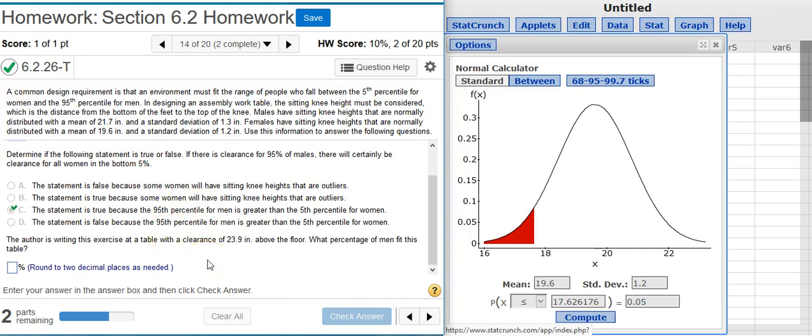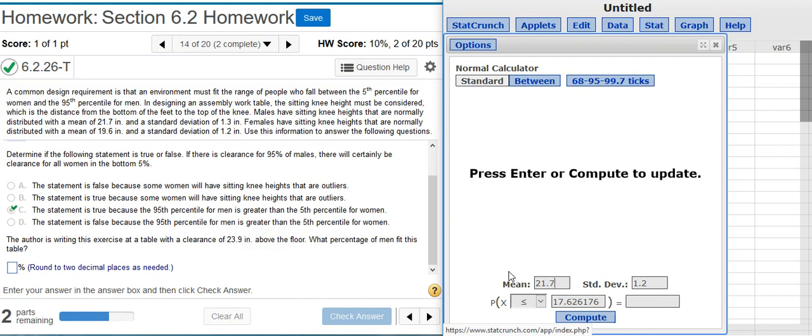And now the next part of the problem asks: the author is writing this exercise at a table with a clearance of 23.9 inches above the floor. What percentage of men fit this table? Well, I need to put my distribution for men back here in my calculator.